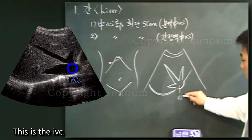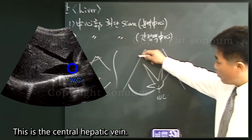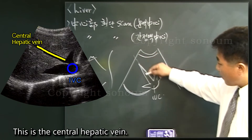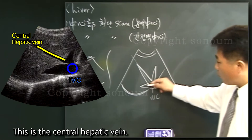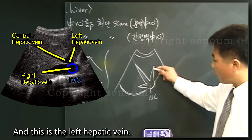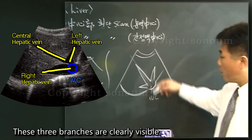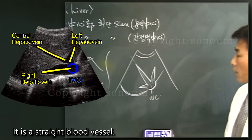This is the eye of C. This is the central hepatic vein, this is the right hepatic vein, and this is the left hepatic vein. These three branches are clearly visible.